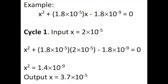Here's an example of a quadratic equation you may see in a chemical equilibrium problem. We first try an input x value of 2×10⁻⁵. We substitute this value into x, but leave the x² term unsubstituted.